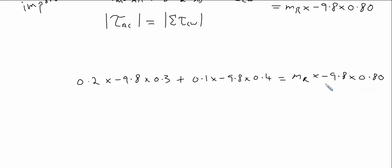We can divide both sides of the equation by negative 9.8 times 0.8 to give us the mass reading. And so if we do that, that will cancel on the right-hand side, leaving us with this equation for the mass reading.